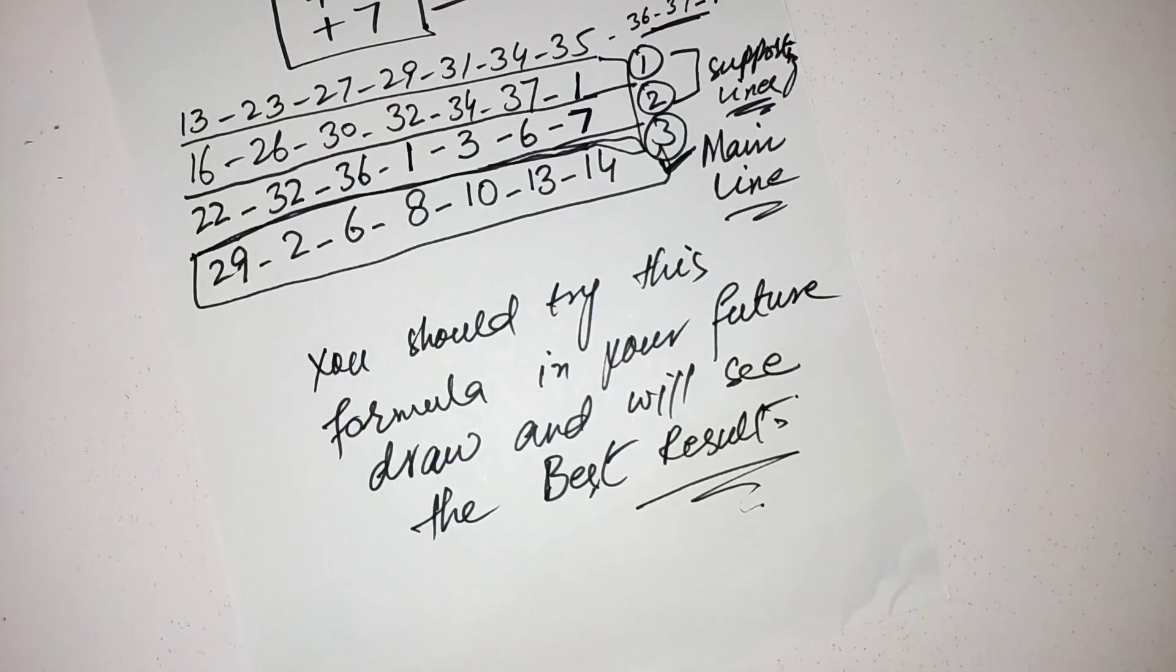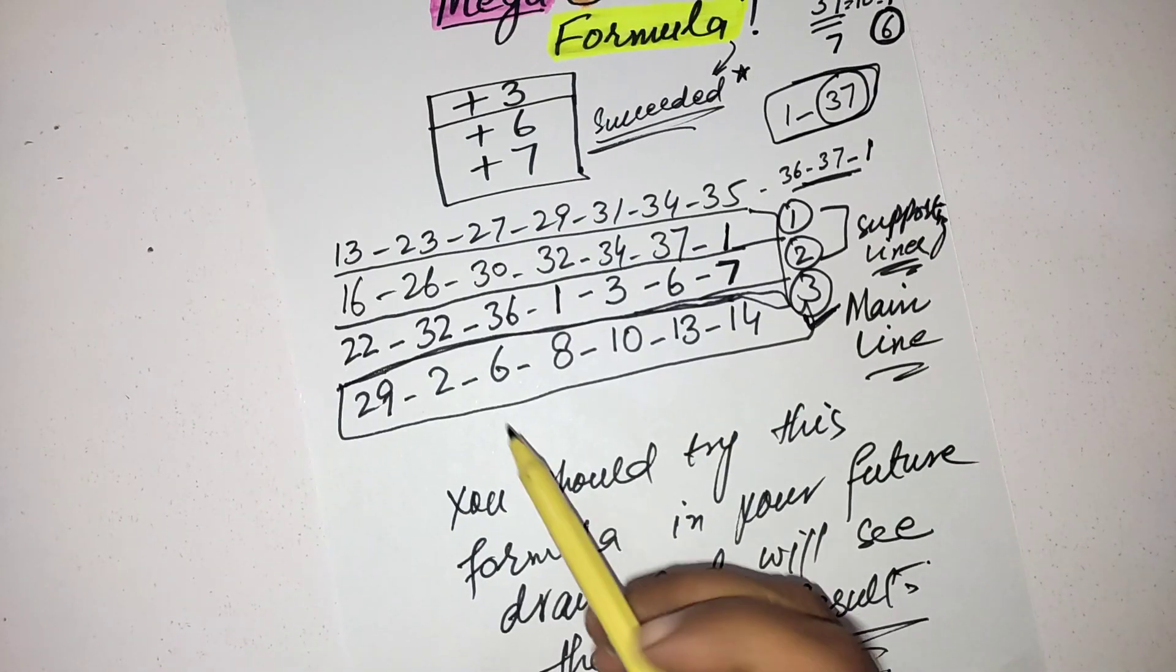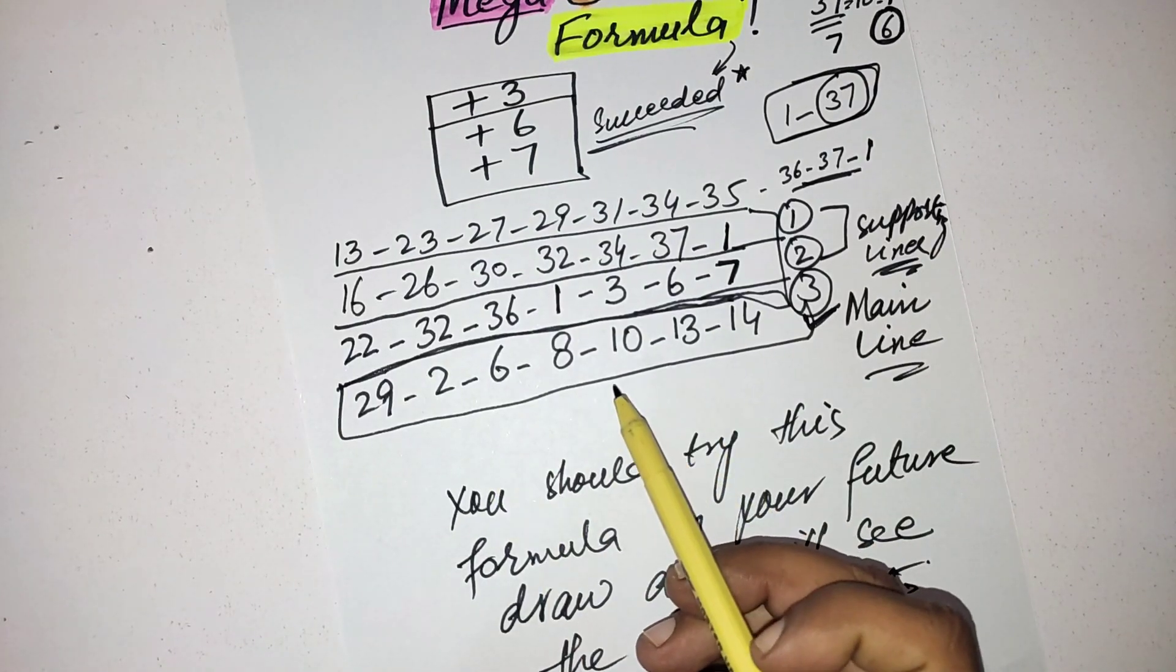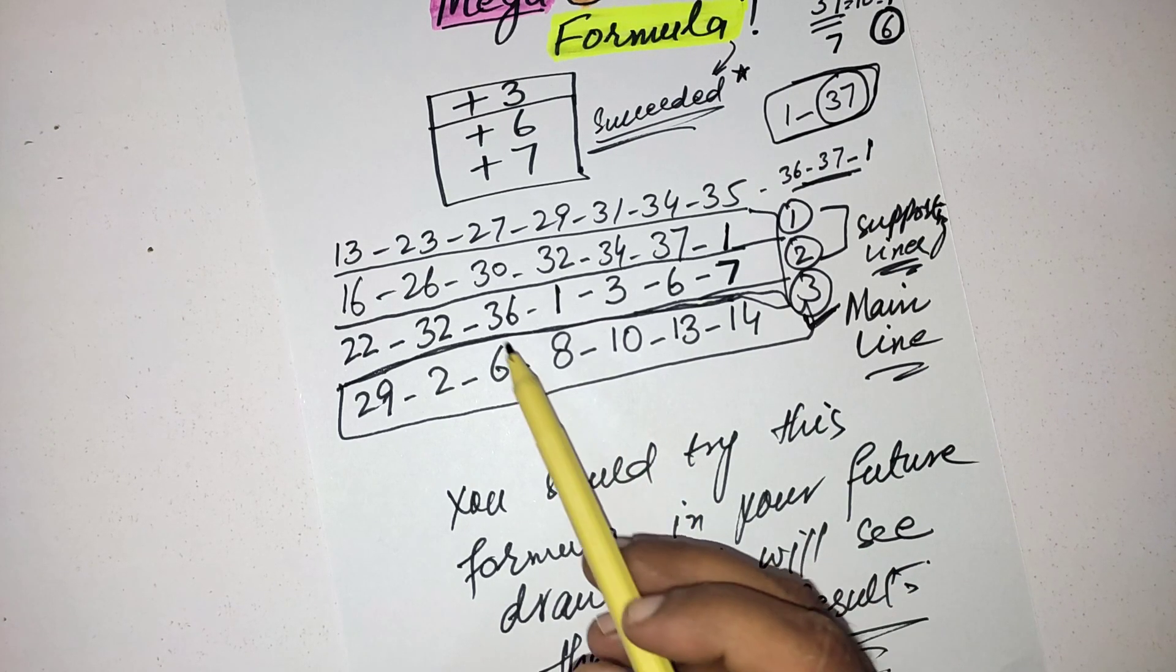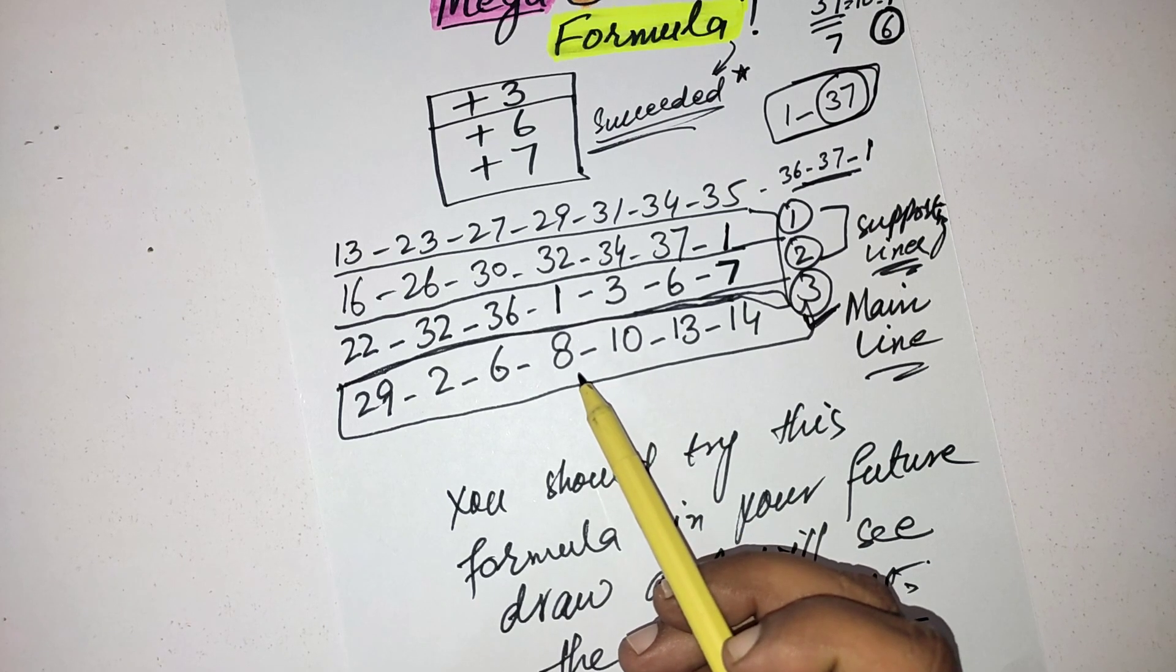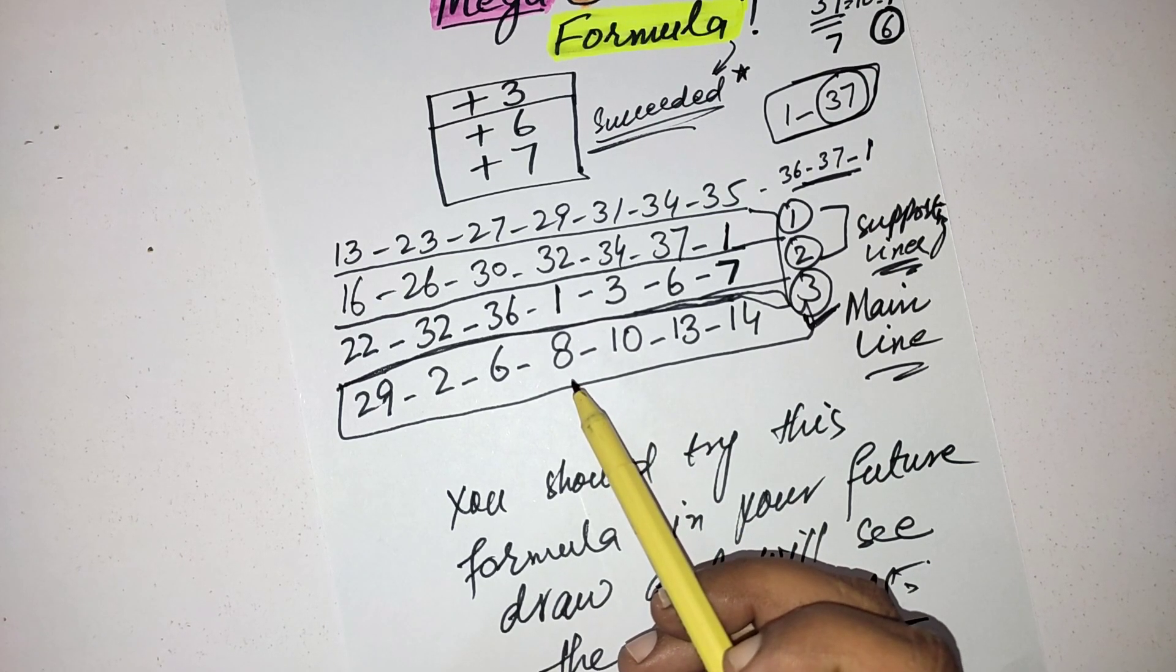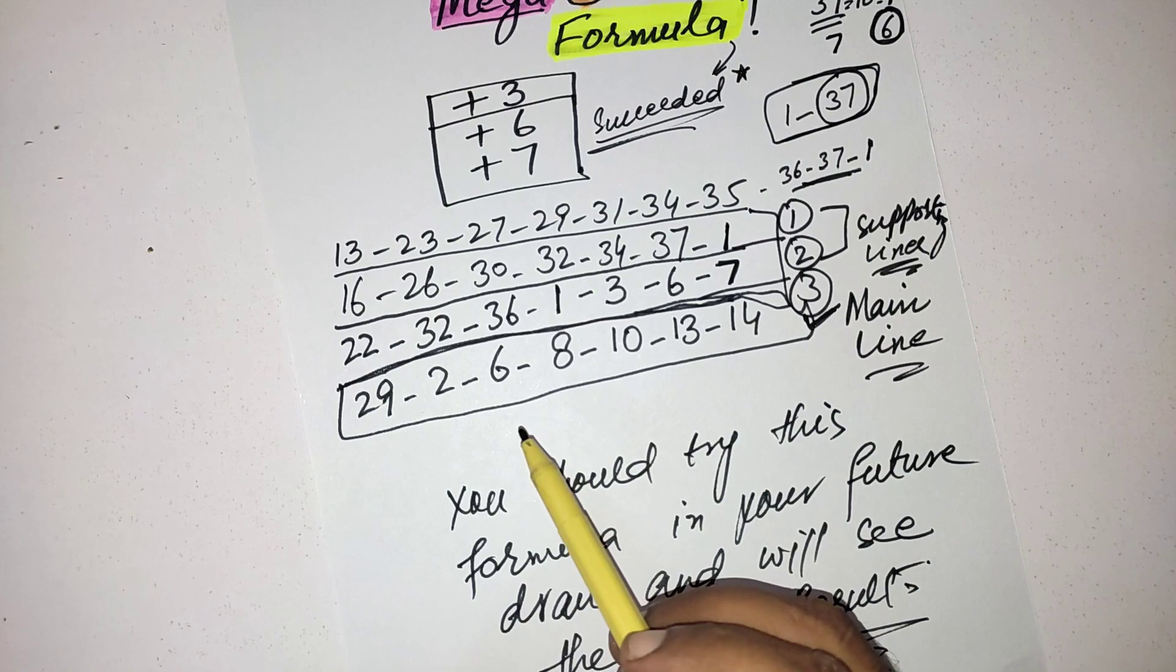Okay guys, if you don't want to play the exact lines, then you can make another line and choose the numbers from these three lines and make your best selection that will make you a jackpot winner.